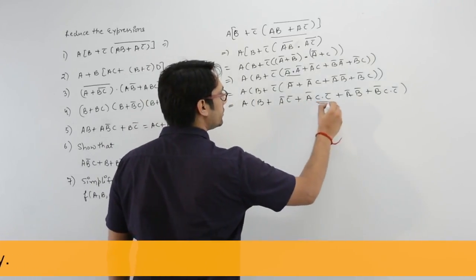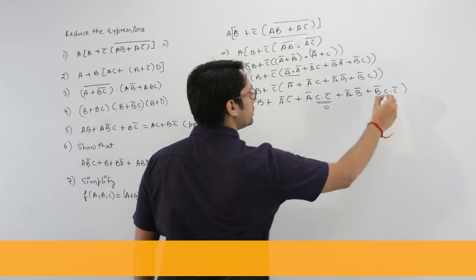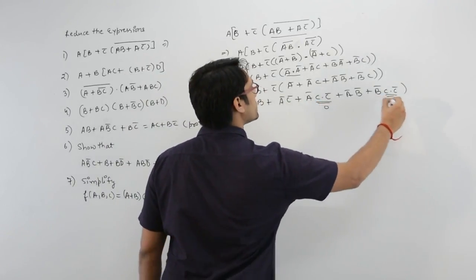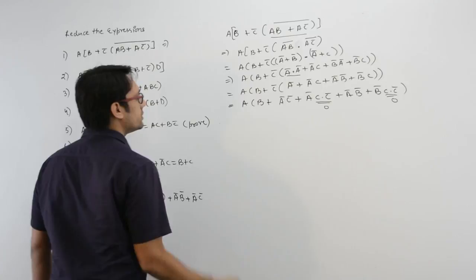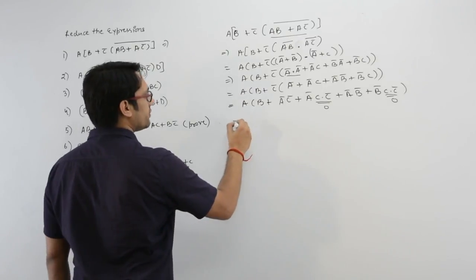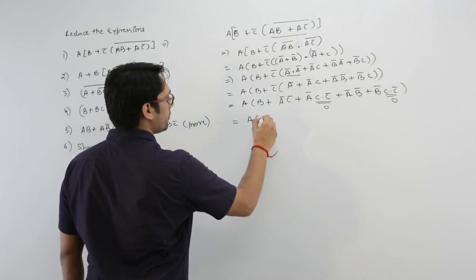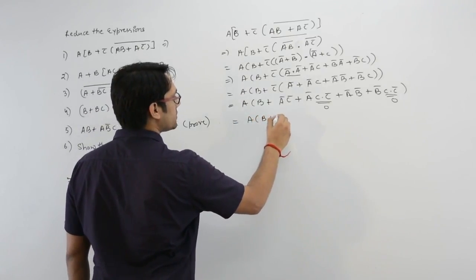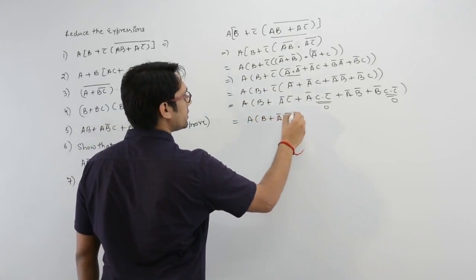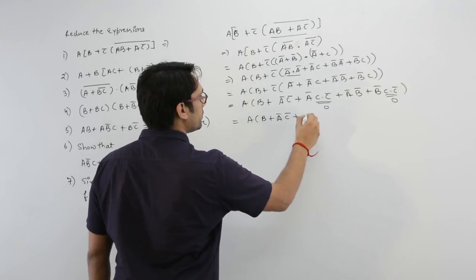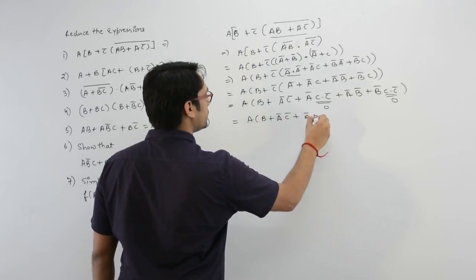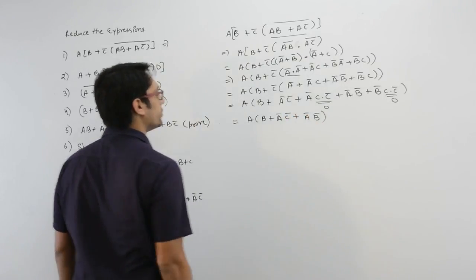The terms a'c·c' and b'c·c' can each be written as 0, since c·c' = 0. So the expression reduces to ab plus a'c' plus a'b' only.